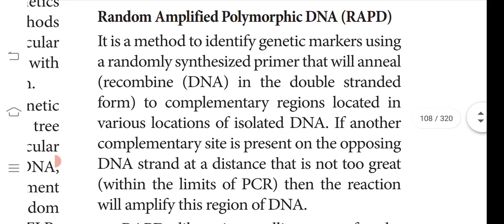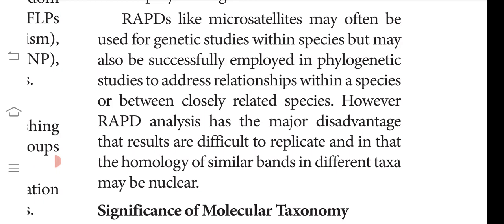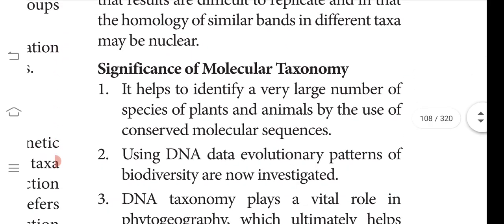RAPD — Random Amplified Polymorphic DNA — identifies genetic markers using randomly synthesized primers. A primer is a known DNA sequence that anneals to a complementary region on the DNA. If another complementary site is present on the opposite strand and the distance is not too great, the region is amplified. RAPD may be used for genetic studies within a species and in phylogenetic studies, but has a major disadvantage: it is difficult to replicate.